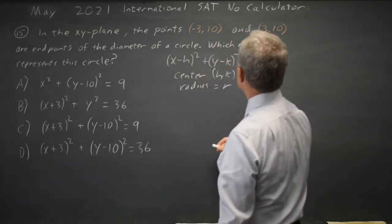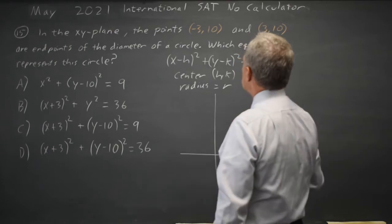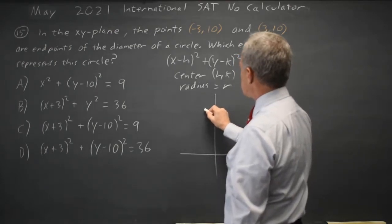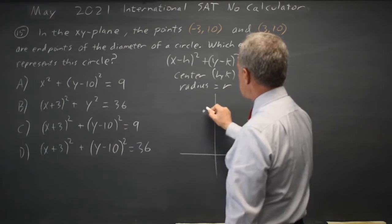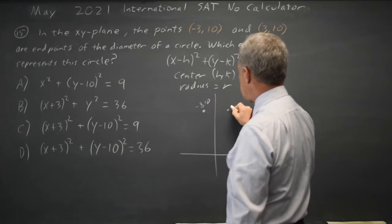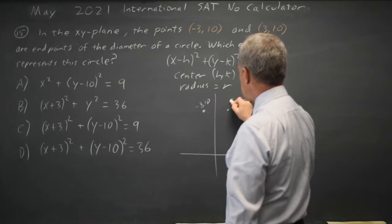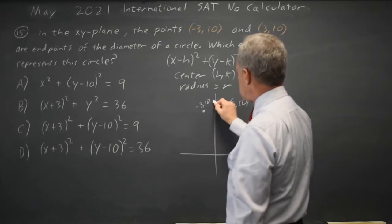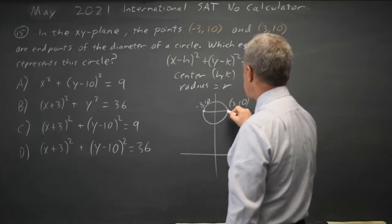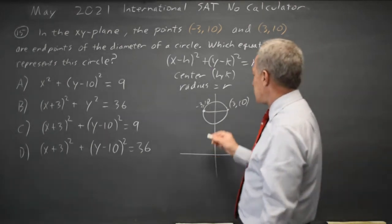In this case, points at the end of a diameter are at negative 3, 10 and positive 3, 10. If I draw a circle, more or less, with those points on the end of a diameter, the midpoint between the two will be the center.